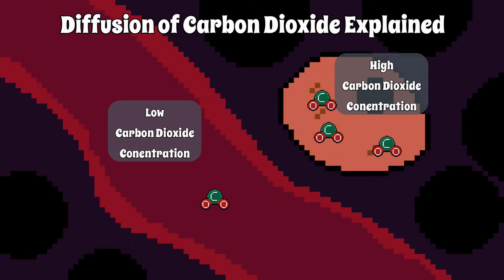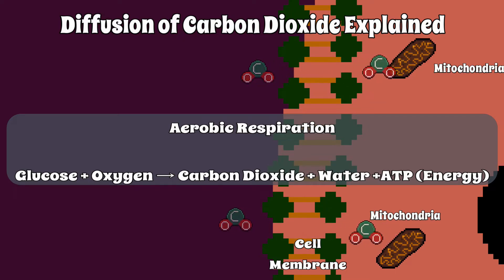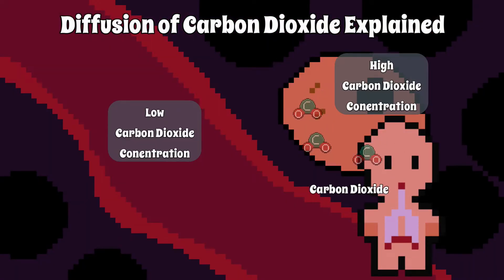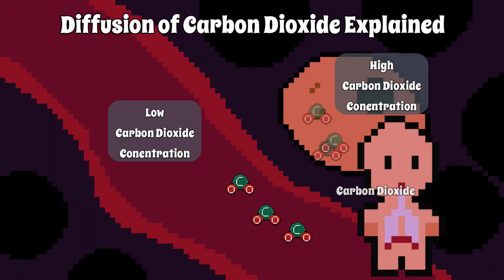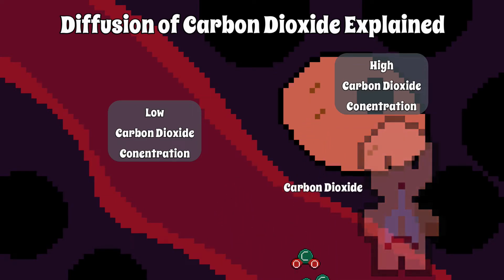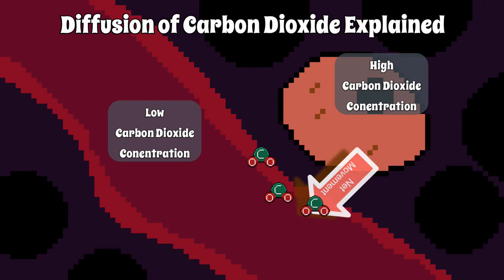Carbon dioxide is usually always higher in the cells because the cell is producing carbon dioxide as a waste product of aerobic respiration. The blood normally has lower concentrations of carbon dioxide because it is removed from the blood when it reaches the lungs. So the net movement of carbon dioxide is out of the cell.